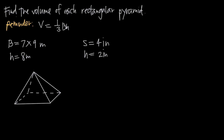The formula we're going to be using to find the volume of a pyramid is: volume is equal to one third times base times height. B is for base, H is for height. When we talk about B being the base, we're talking about the area of the base of the pyramid. And the height is not the slant height — it's the length of the altitude of the pyramid.